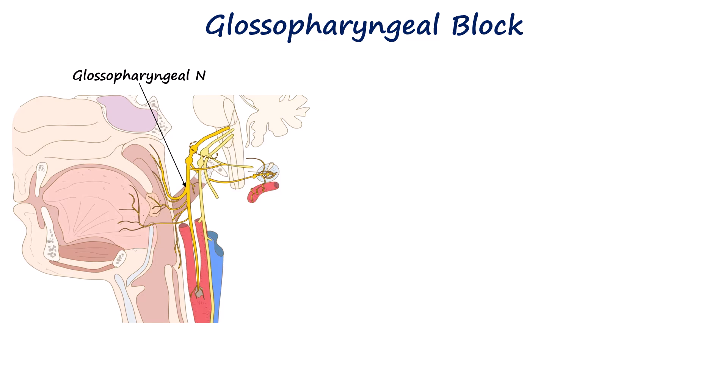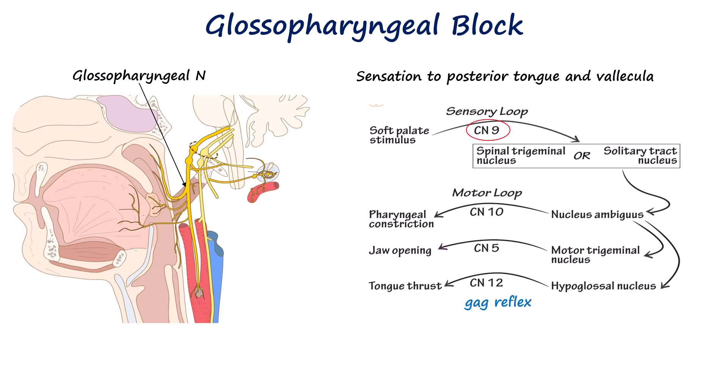Let's begin with the glossopharyngeal nerve block. The glossopharyngeal nerve provides sensation to the posterior third of the tongue and the vallecula, and also provides the sensory limb for the gag reflex. Therefore, this nerve block is particularly useful in abolishing the gag reflex.